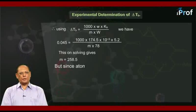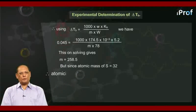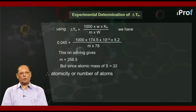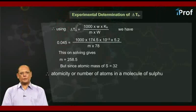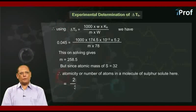But since atomic mass of sulfur is equal to 32, therefore atomicity or number of atoms in a molecule of sulfur solute will be 258.5 divided by 32, and that comes out to be around 8.